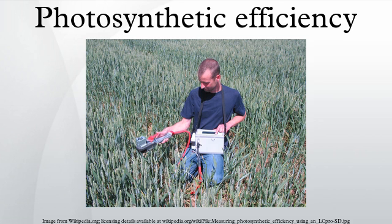The photosynthetic efficiency is the fraction of light energy converted into chemical energy during photosynthesis in plants and algae. Photosynthesis can be described by the simplified chemical reaction: 6H₂O plus 6CO₂ plus energy yields C₆H₁₂O₆ plus 6O₂, where C₆H₁₂O₆ is glucose.